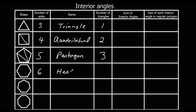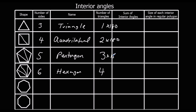Here I've got a hexagon. So from one corner to the other corners, I can make four triangles. So we're going to keep going like that. The sum of the interior angles — so how much it adds up to — is the number of triangles times 180. So one times 180. Angles in a triangle add up to 180 degrees.